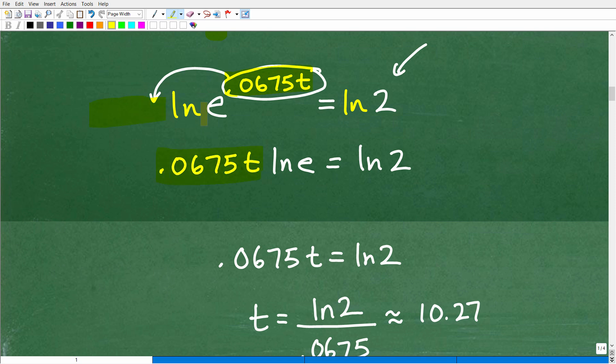But once I take the log of both sides, I can bring this whole thing down here in front of that L-N, E. Okay, so that's the power of taking the log of both sides and using these properties of logarithms. So I have 0.0675T, there's my variable, times L-N, E. Now, if you're really up to speed on things, L-N, E, you should know L-N, E, this is some basic stuff you should know. It's just equal to 1, so this is a nice fancy 1 right here.